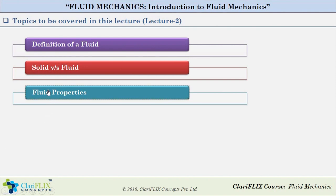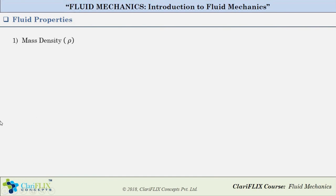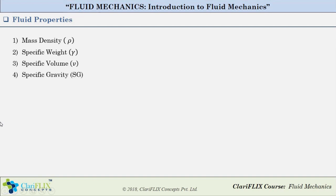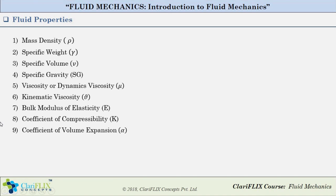Let us now move ahead and look at the important fluid properties. Firstly, mass density. Then specific weight. Third, specific volume. Fourth, specific gravity. Fifth, viscosity. Sixth, kinematic viscosity. Seventh, bulk modulus of elasticity. Eighth, coefficient of compressibility. Ninth, coefficient of volume expansion. Tenth, surface tension. And eleventh, capillarity. We will go through all these properties one by one and try to understand their physical significance.